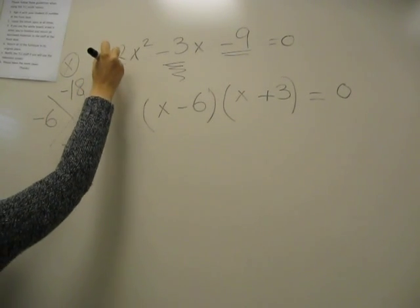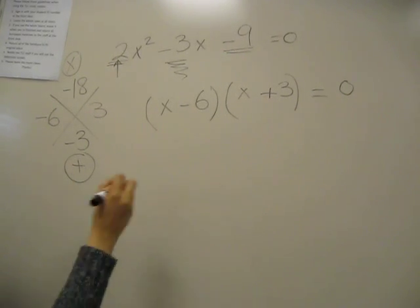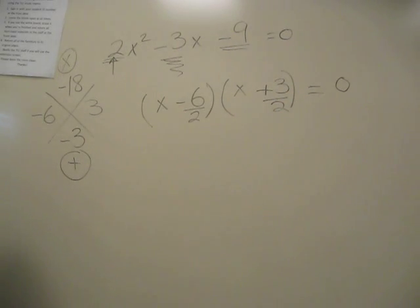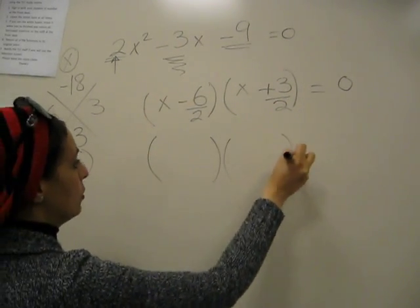Then we're going to take the first coefficient, which is the coefficient of X squared, always the first number, and we're going to divide our numbers that we figured out. In this case, you'll have to reduce if it's reducible.